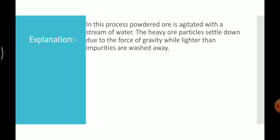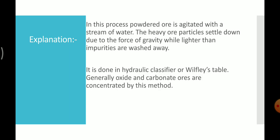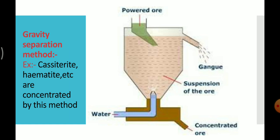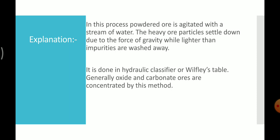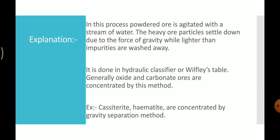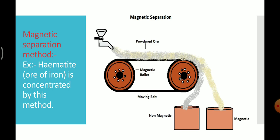Second point: it is done in a hydraulic classifier or a wilfley table. Generally, oxide and carbonate ores are concentrated by this method. Examples: cassiterite, hematite, and ores of iron and tin are concentrated by gravity separation method.